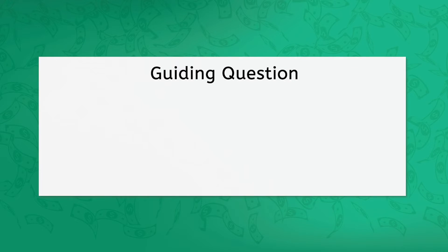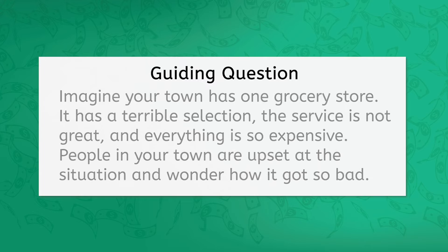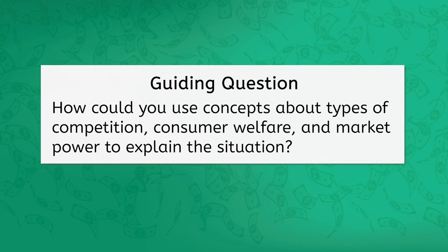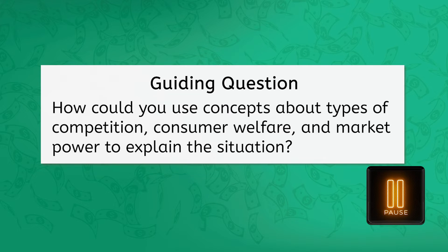Let's take a second to think about this practically. Imagine your town has one grocery store. It has a terrible selection, the service is not great, and everything is so expensive. People in your town are upset at the situation and wonder how it got so bad. How could you use concepts about types of competition, consumer welfare, and market power to explain the situation?